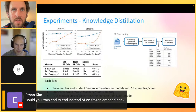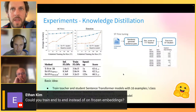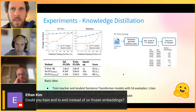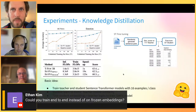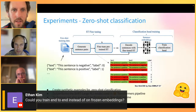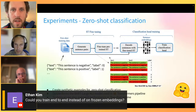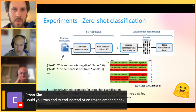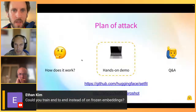Question: could you train SetFit end-to-end instead of on frozen embeddings? Yes - a community member is implementing this in the library, so it may be available soon. The advantage of frozen embeddings is simplicity: you do the contrastive learning fine-tuning, then the classification head. End-to-end training would enable more optimized inference - for example, exporting to ONNX and quantizing as a single neural network.